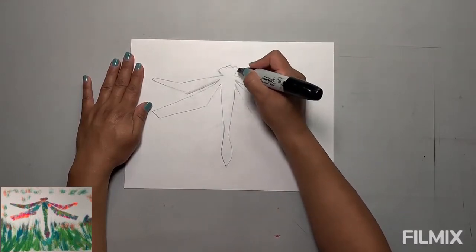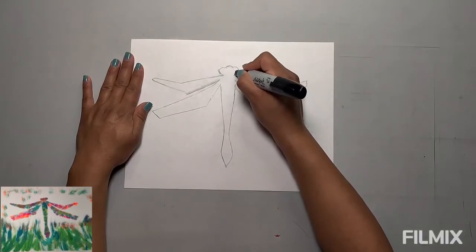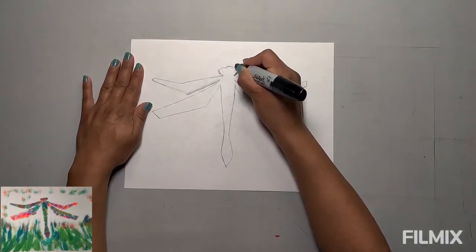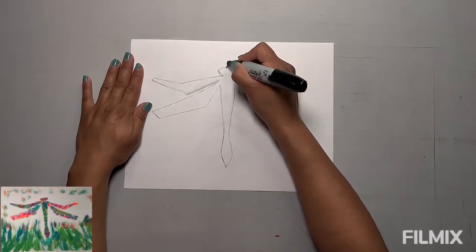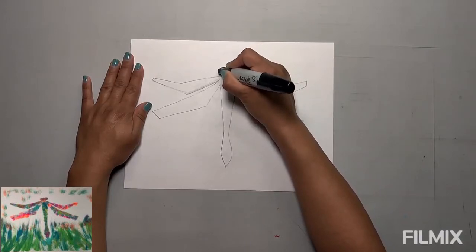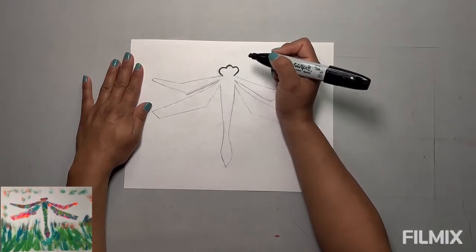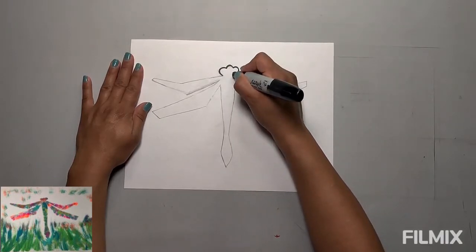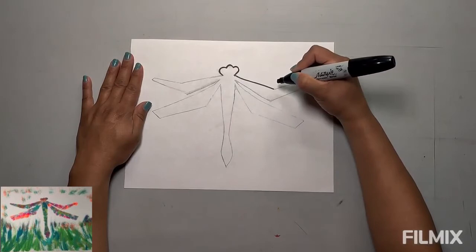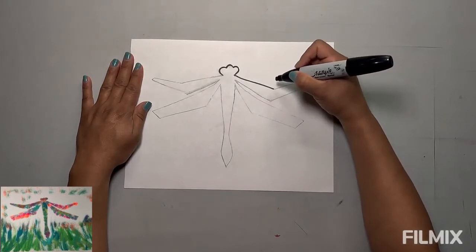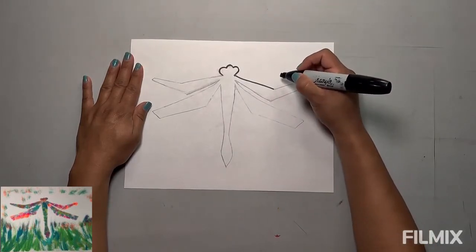We're going to start with the head. I'm going to figure out where I want my head to start, and I would start at the top of the middle of your paper. I'm going to make three little lumps. Then we're going to draw the first wing. You're going to slightly go downward, about half a length of a pencil.